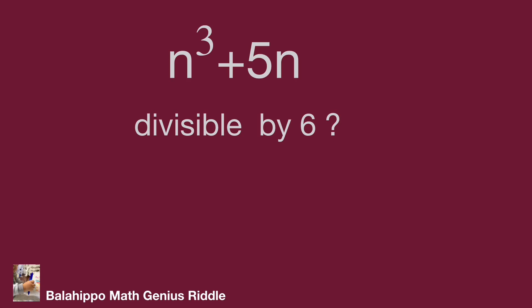For the first approach, if the value can be divisible by 6, it means 6 is a factor of this value. Since 6 equals 2 times 3, both 2 and 3 are factors of 6. So if we can prove that both 2 and 3 are factors of n cubed plus 5n, then 6 is a factor of n cubed plus 5n, meaning it is divisible by 6.